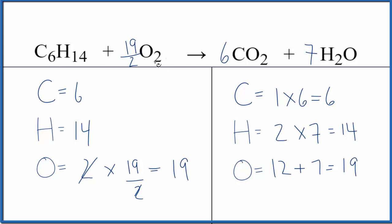Some teachers don't like having the fraction here. So if you want to get this to whole numbers, just multiply everything by two. When we do that, we end up with the balance equation for C6H14 plus O2. This is the same ratio of coefficients, it's just whole numbers now.